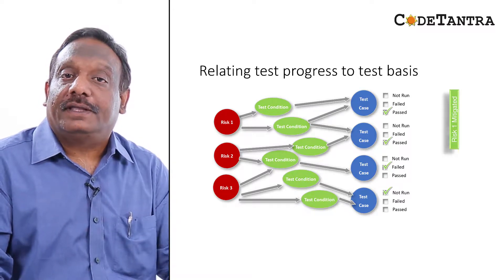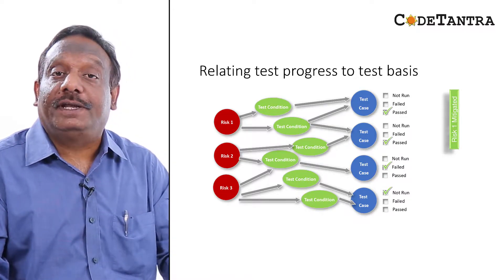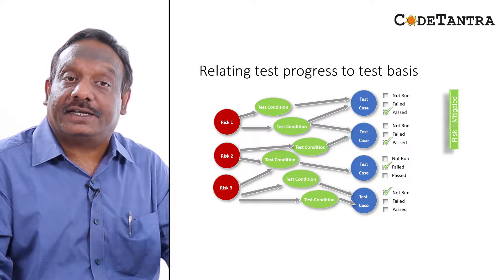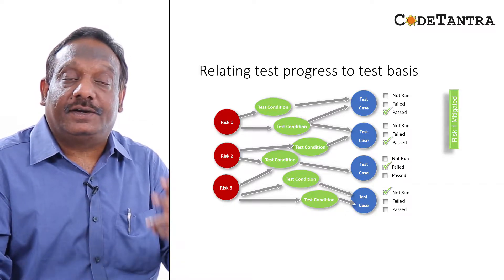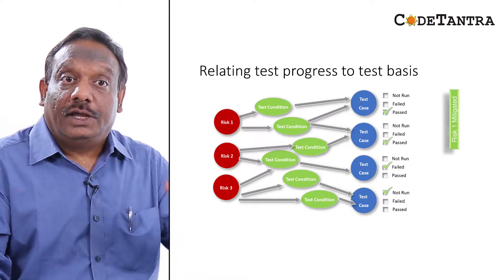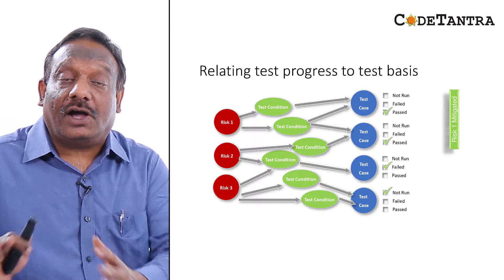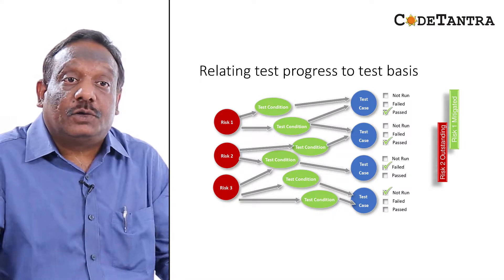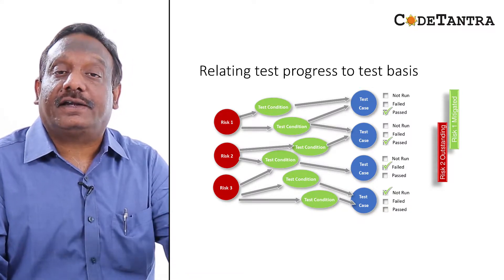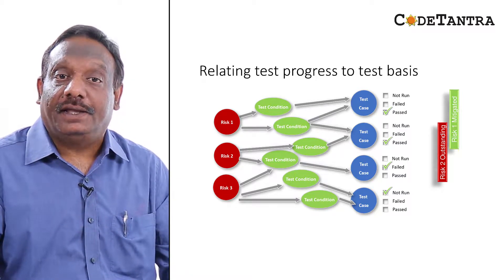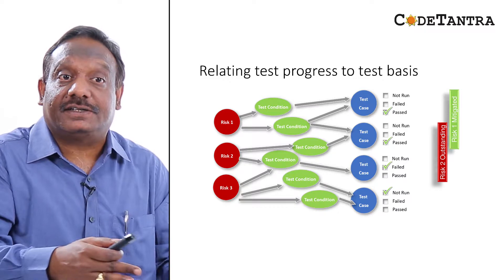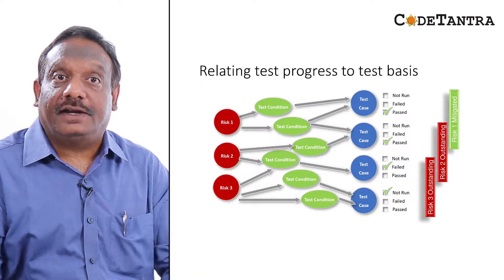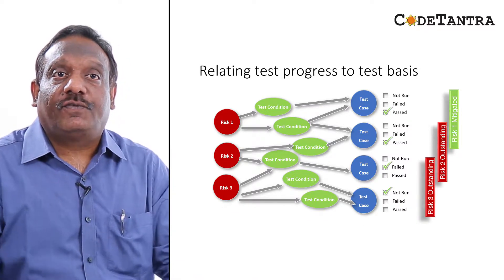Test case three has been run but failed. Tracing it back, it links to test condition four, which was designed to mitigate risk two. So risk two is only partially mitigated — it is still outstanding because test case three failed. Test case four has not yet been run; it is linked to two test conditions that are linked to risk three. Therefore, risk three is also outstanding. This is how we use the framework to relate test progress back to the test basis.